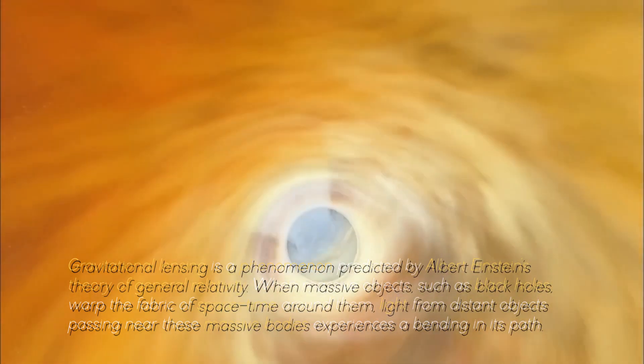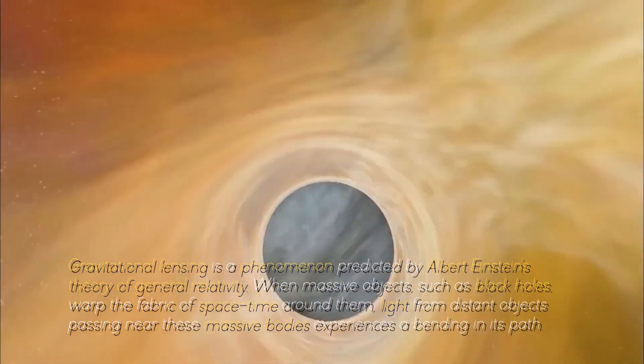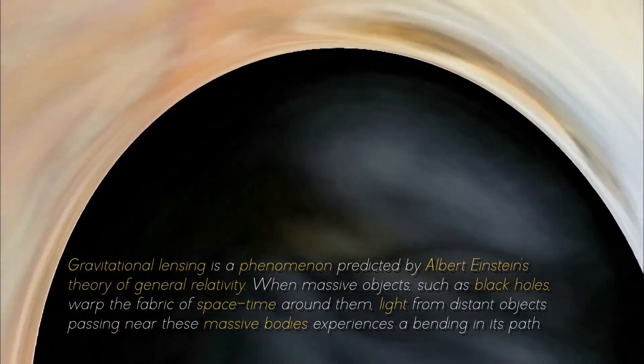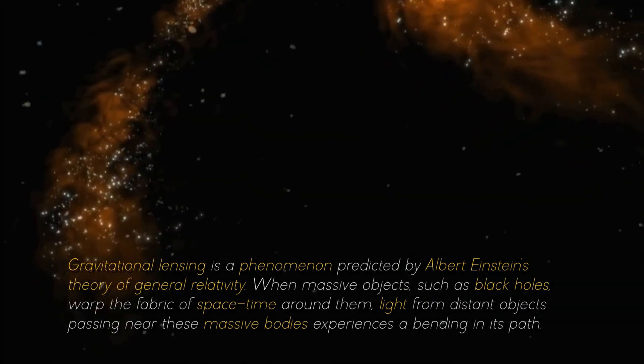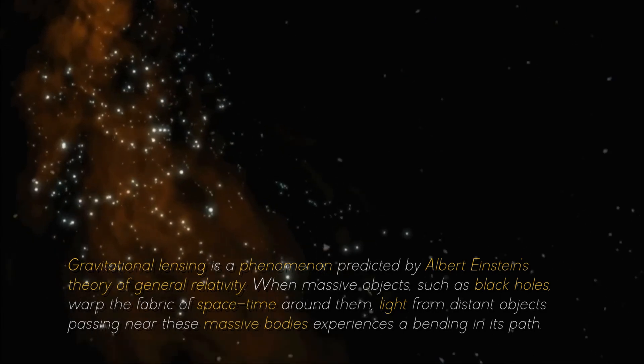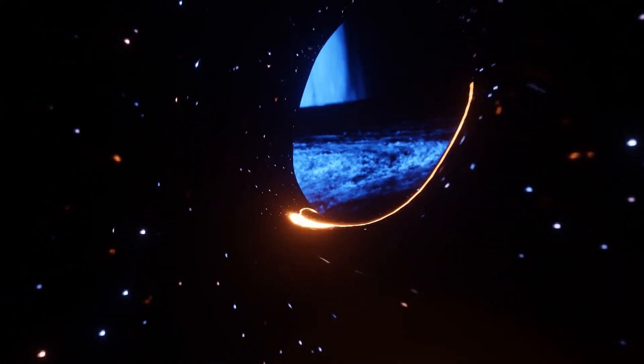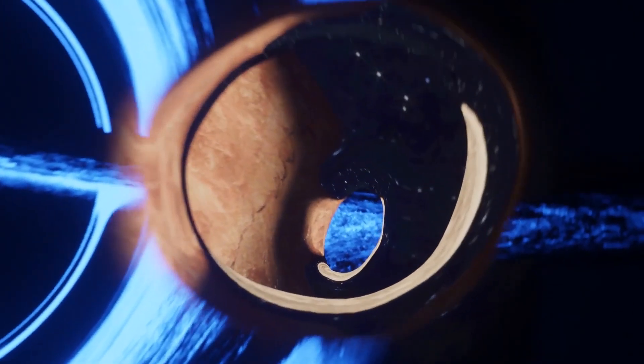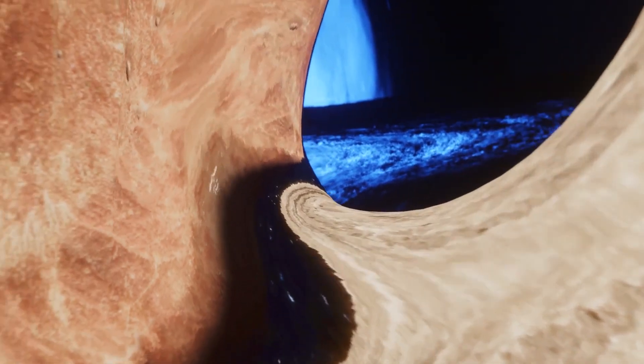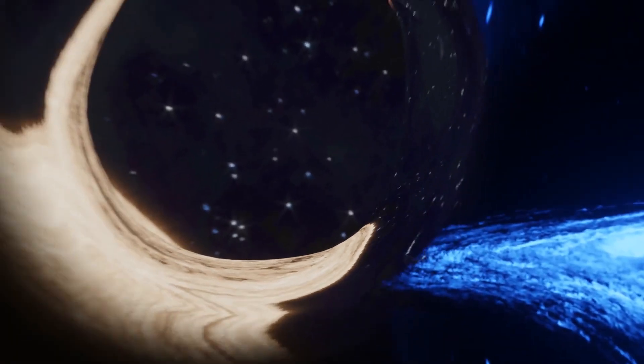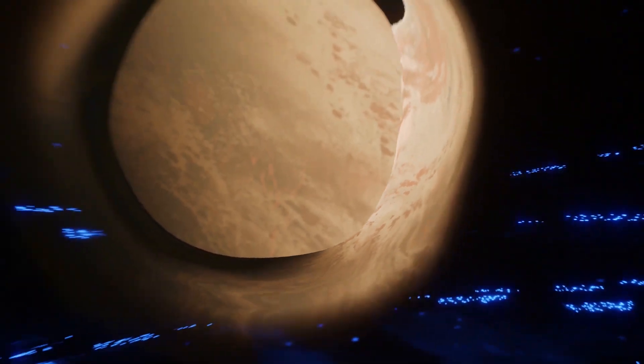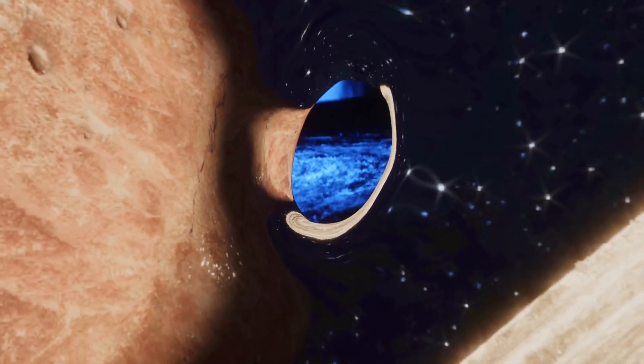Gravitational lensing is a phenomenon predicted by Albert Einstein's theory of general relativity. When massive objects, such as black holes, warp the fabric of space-time around them, light from distant objects passing near these massive bodies experiences a bending in its path. This results in a visual distortion or magnification of the object's image. Massive bodies, such as stars or black holes, are especially effective in causing significant gravitational lensing due to their immense gravitational attraction. Black holes, in particular, represent one of the most extreme examples due to their incredible mass and compact size, leading to very pronounced lensing effects.